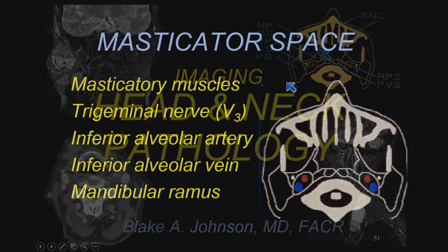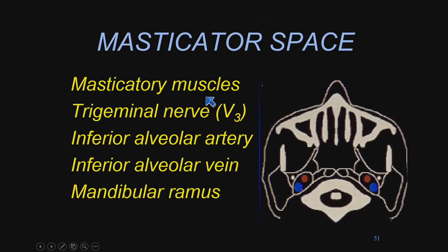The masticator space contains the muscles of mastication, the third division of the fifth cranial nerve which innervates those muscles, the inferior alveolar artery and vein, and the ramus of the mandible.